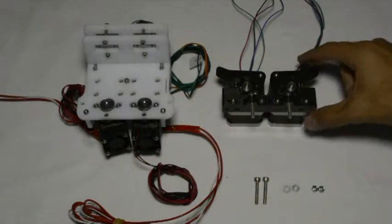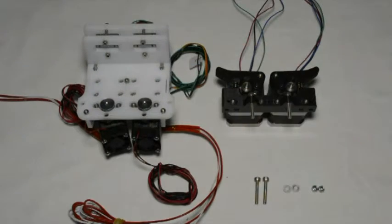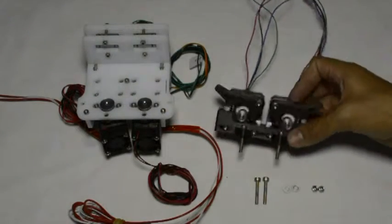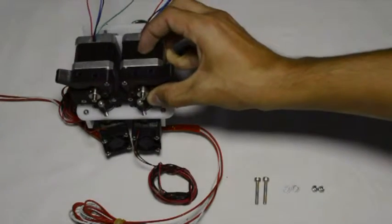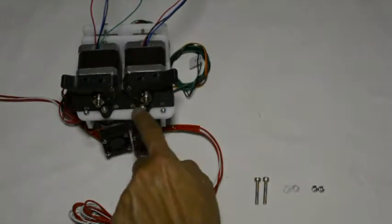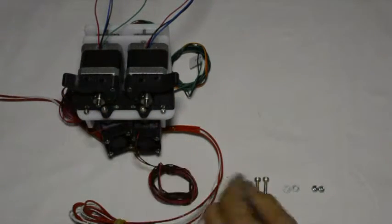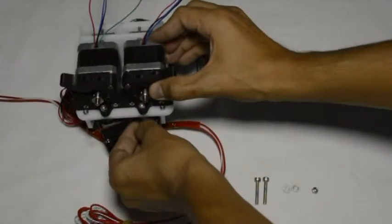Now we will assemble the extruder assembly that we assembled previously to the frame assembly. What we'll need for that is two M4 by 25 screws, two M4 washers and two M4 lock nuts. Now we will put the extruder assembly on top of the frame assembly. So that these two M4 screws go into those two holes. And while it goes in,